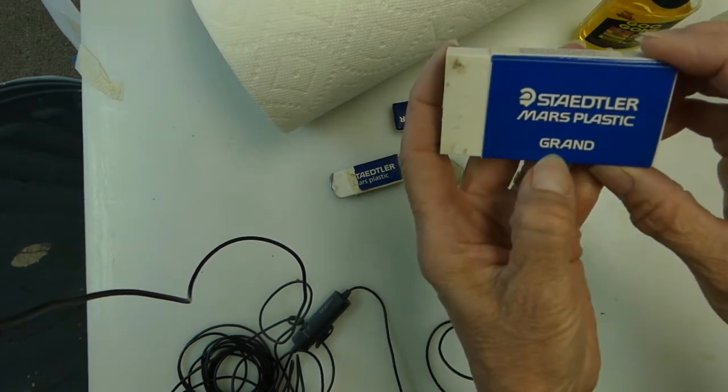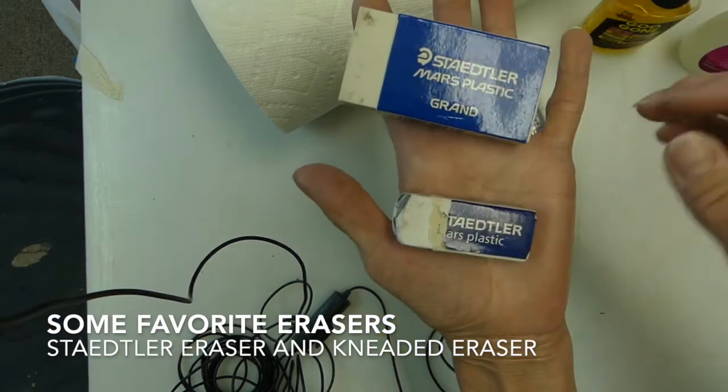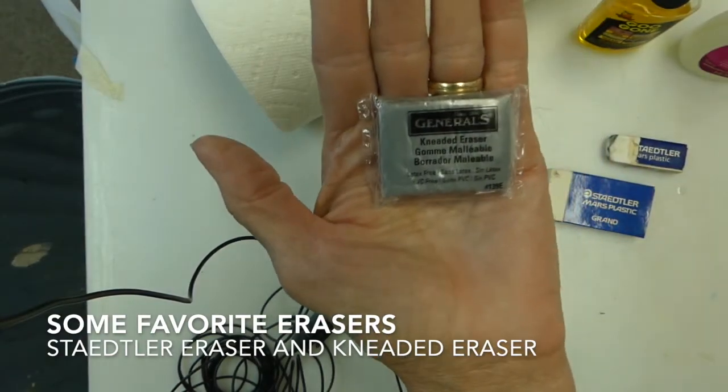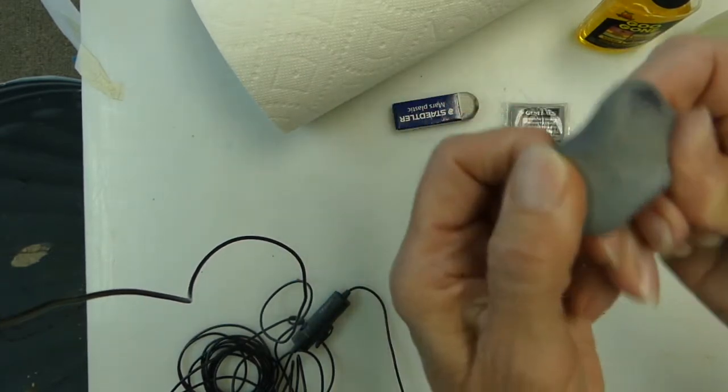So there's a couple things I want to talk about. The Staedtler Mars Plastic Grand, they come in different sizes, are some of my favorites. They just really work well. And then this is called a kneaded eraser, K-N-E-A-D-E-D. A kneaded eraser, and they start looking like this.